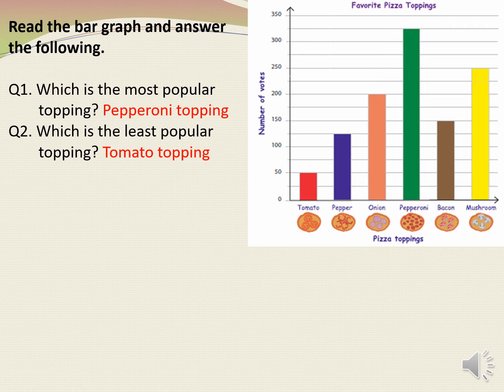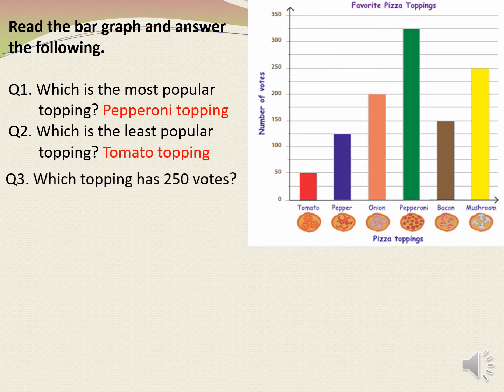Next: which is the least popular topping? To find out the answer, we need to see the bar which is the shortest — that is, tomato topping. Next: which topping has 250 votes? We need to find out which bar reaches 250. The yellow bar is reaching 250 votes. Therefore, the answer will be mushroom topping.